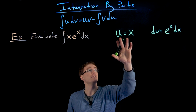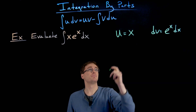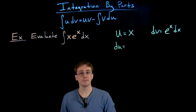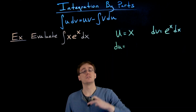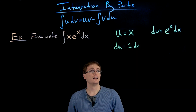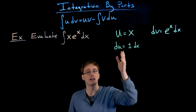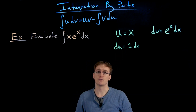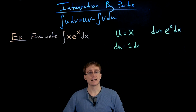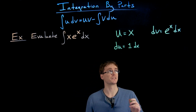We've identified u and dv; now we need to use them to find du and v. To go from u to du we take the derivative: du/dx is the derivative of x with respect to x, which equals 1. Multiplying both sides by dx, du is just equal to 1 times dx, or simply dx in this example.